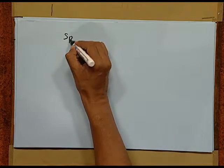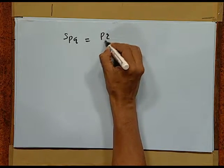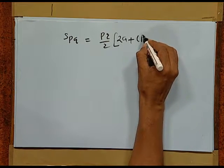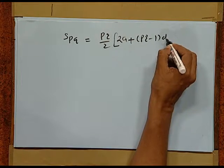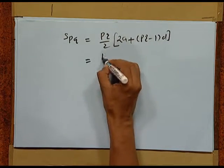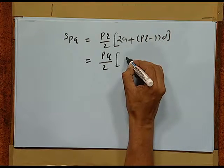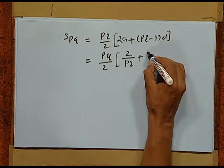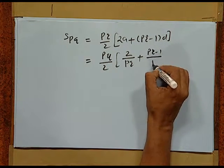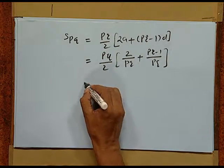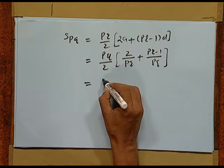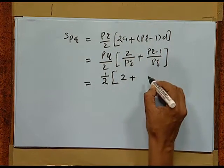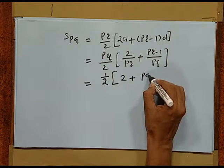Having found both a and d, we can find the sum of pq terms. S_{pq} = (pq/2) × [2a + (pq − 1)d]. Substituting a = 1/(pq) and d = 1/(pq), we get (pq/2) × [2/(pq) + (pq−1)/(pq)], which simplifies to (1/2)(pq + 1).